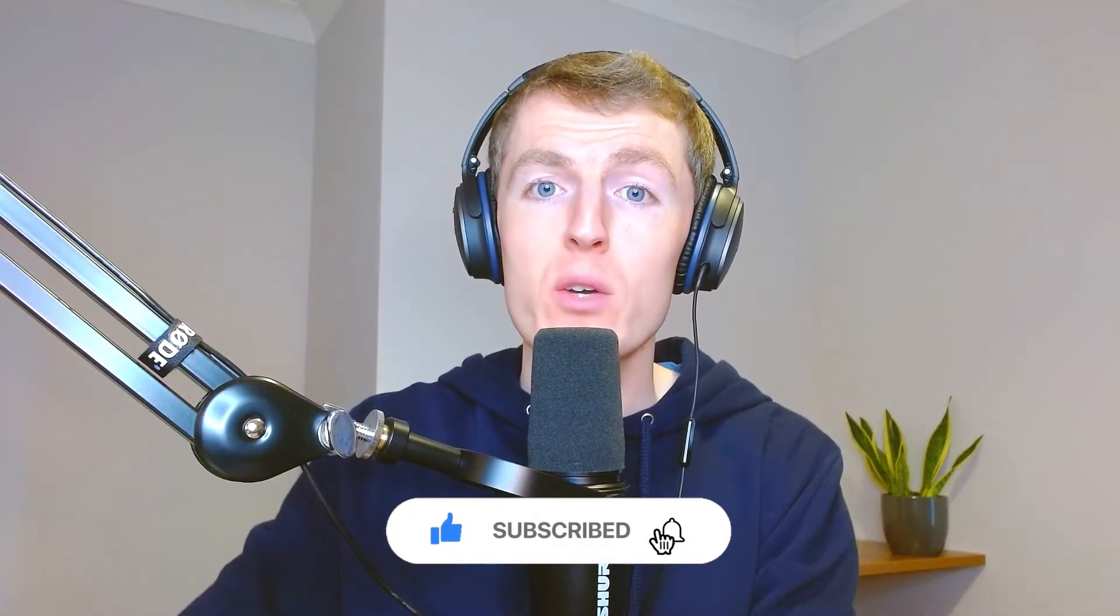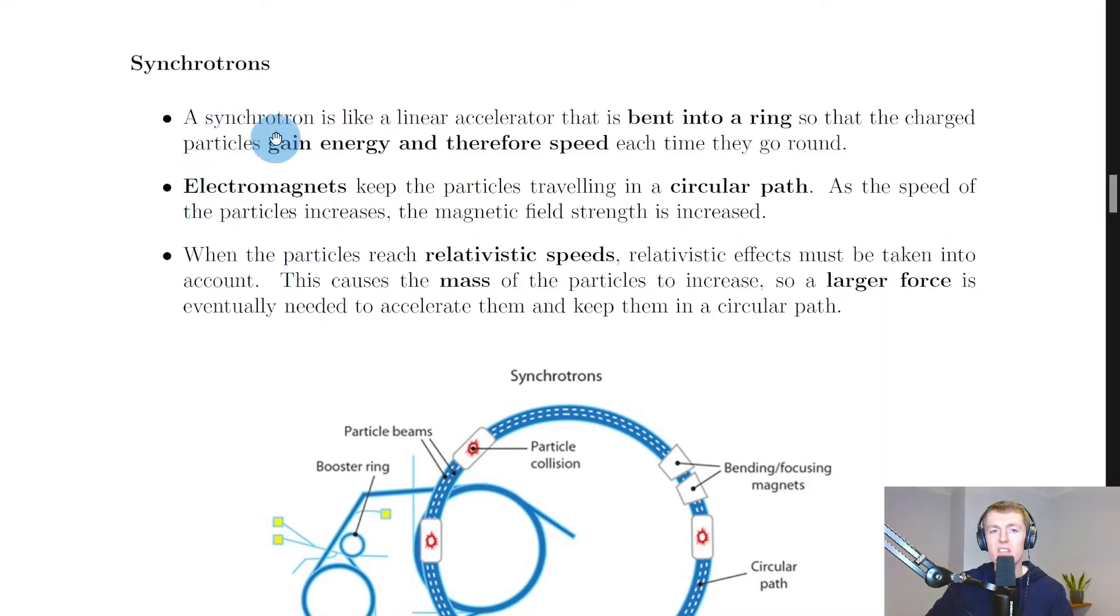Hey guys, how's it going? Mr. Mitchell here. In this video we're going to look at our fourth and final type of particle accelerator, which is the synchrotron. So let's get started. It says here that a synchrotron is like a linear accelerator that is bent into a ring.